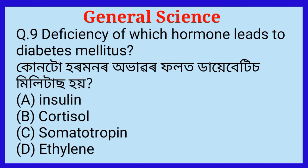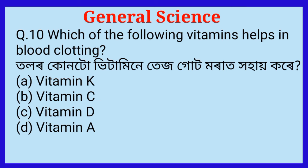Question number nine: Deficiency of which hormone leads to diabetes mellitus? Due to deficiency of which hormone does diabetes mellitus occur? The answer is option A, insulin. Question number ten: Which of the following vitamins helps in blood clotting? The answer is option A, vitamin K.